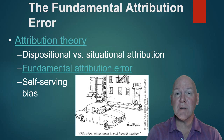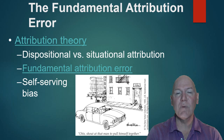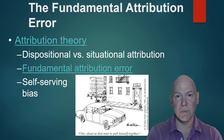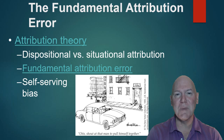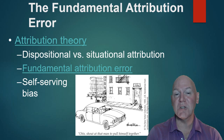Attribution is usually either dispositional — the disposition of the person, which is their personality — or situational, meaning it was the situation that person was in that made them behave that way. We're differentiating between the person themselves and the situation they're in.